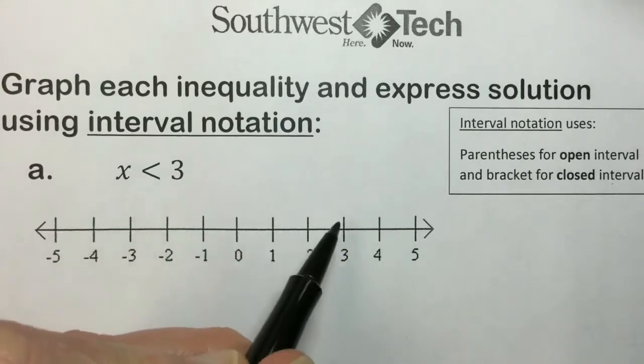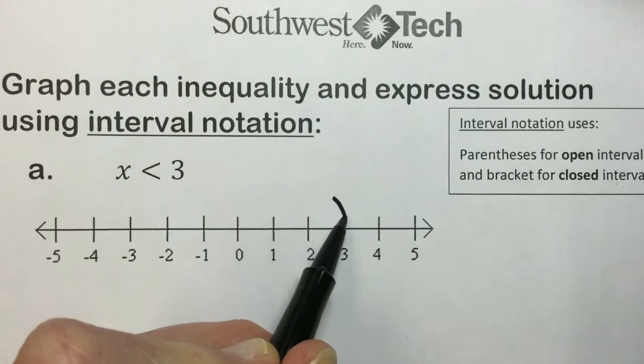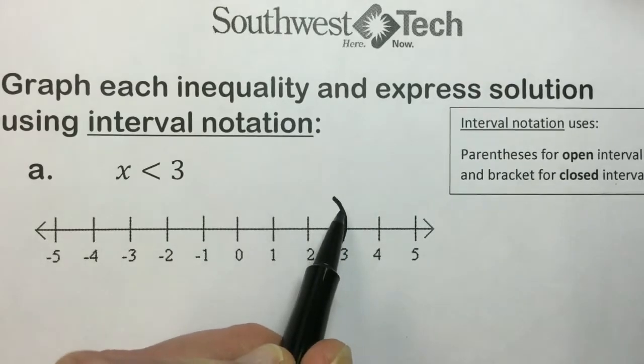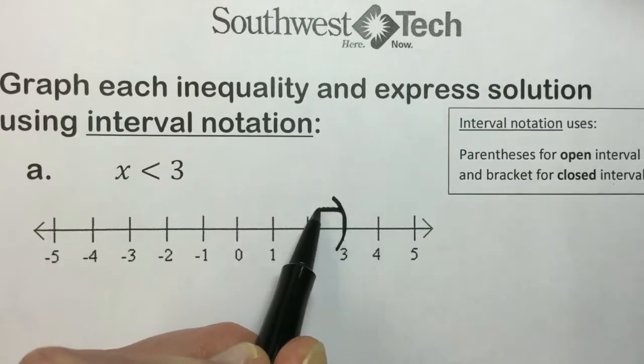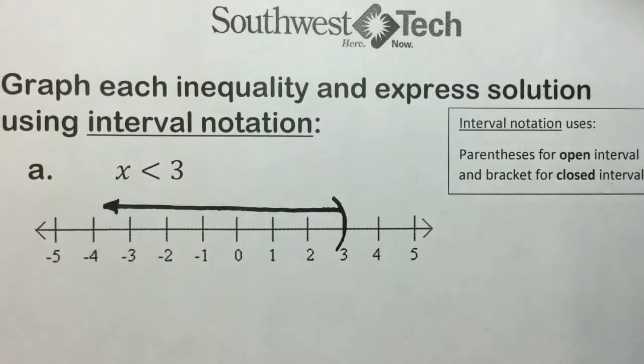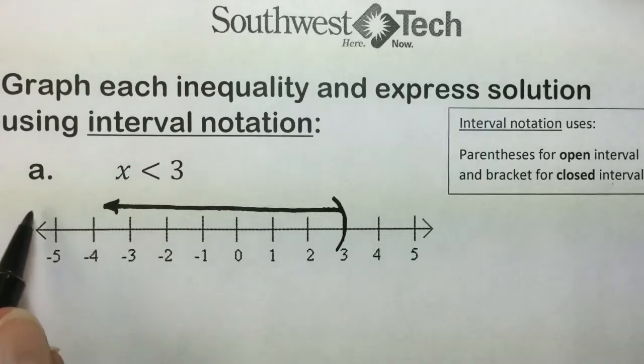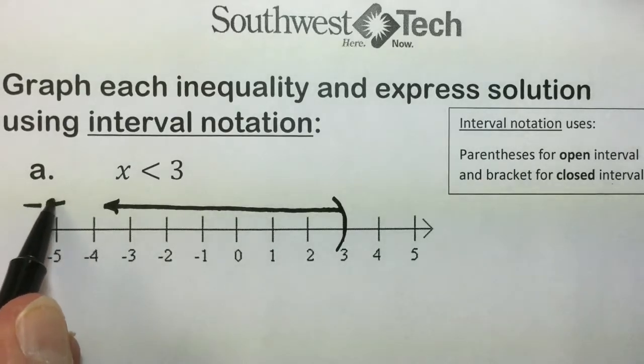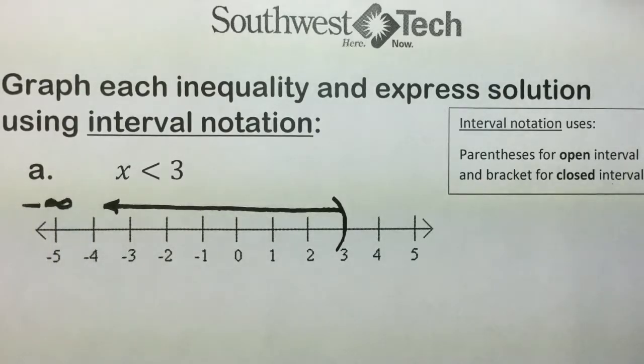We are not including 3, so we'll use a parenthesis or an open point, and all values less would be to the left continuing infinitely towards negative infinity. The symbol we use for negative infinity is the sideways 8 with the minus sign in front of it.